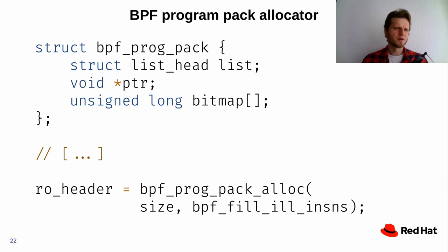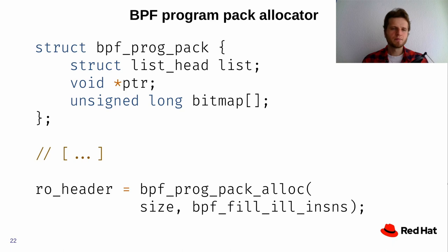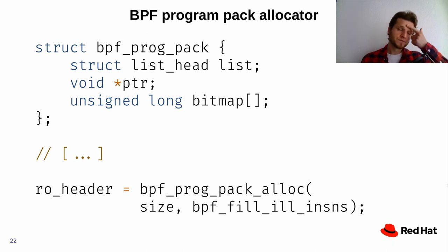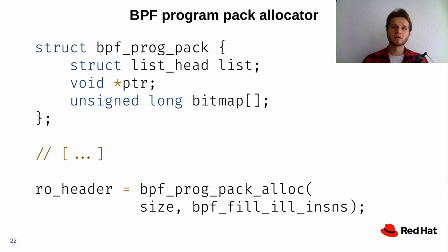Another interesting feature I'm curious about is pack allocators. Originally, every BPF program, no matter how small, had to reside in its own memory page. On a loaded server with many BPF programs this puts significant pressure on the TLB — instruction TLB misses become high and performance takes a hit. Modern kernel versions try to pack programs together, especially using huge pages, so many programs share the same page, minimizing TLB miss impact and reducing TLB pressure overall. The only consideration is whether huge pages are enabled on your instances.